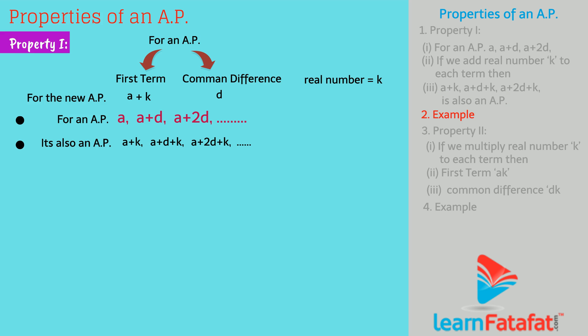Let us prove this by an example. Consider an AP given as 1, 3, 5, 7. For this AP, first term a is equal to 1 and common difference d is equal to 2.